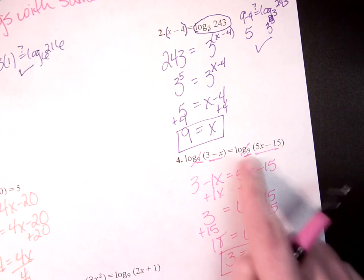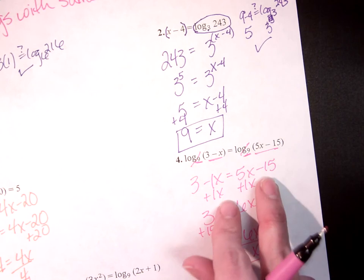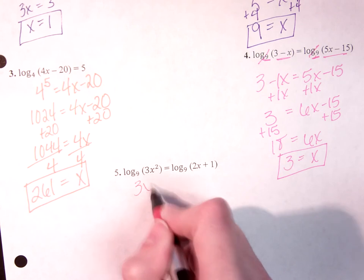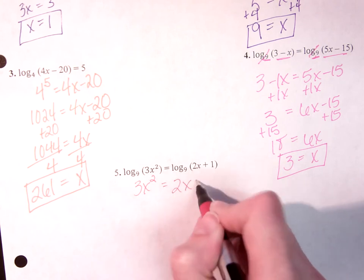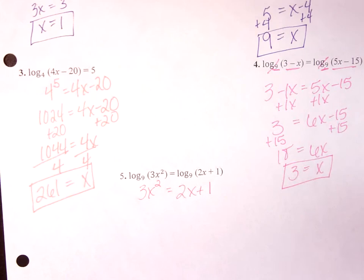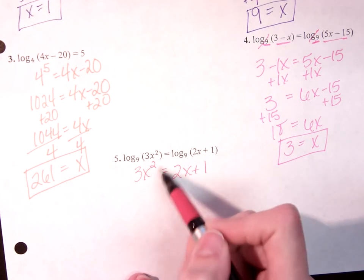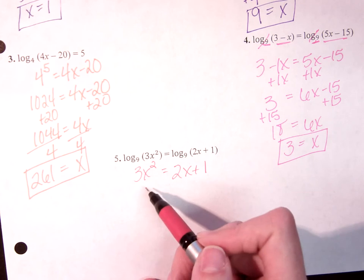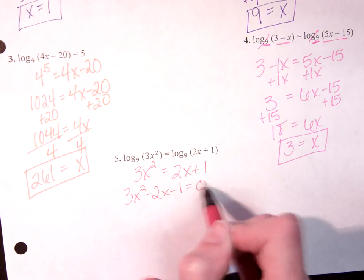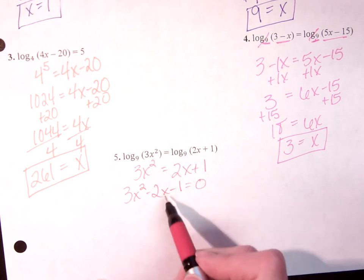The bases already match, so all we have to do is get the arguments to be equal to solve for x. I've got log terms on both sides. They both have the same base, so I'm going to set the inside equal. 3x squared is equal to 2x plus 1. Everything up to now has been linear. First degree x, easy to solve. We're used to dealing with it, but now I've got this squared term, which means I need to move everything over to that side and set it equal to 0. 3x squared minus 2x minus 1 equals 0.